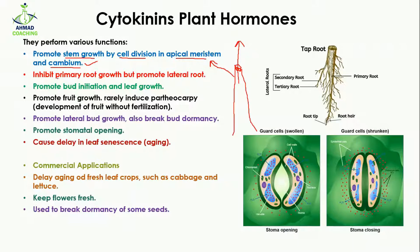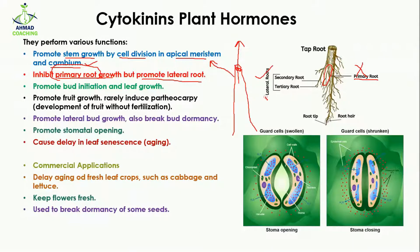Cytokinin is going to inhibit the primary root growth but promote the lateral root growth. The main root is known as the primary root, and when branching starts from the primary root, those branched roots are known as lateral roots. Cytokinin inhibits the growth of the primary root but increases the length of the lateral roots so that more branches are produced and they can easily penetrate into the soil.